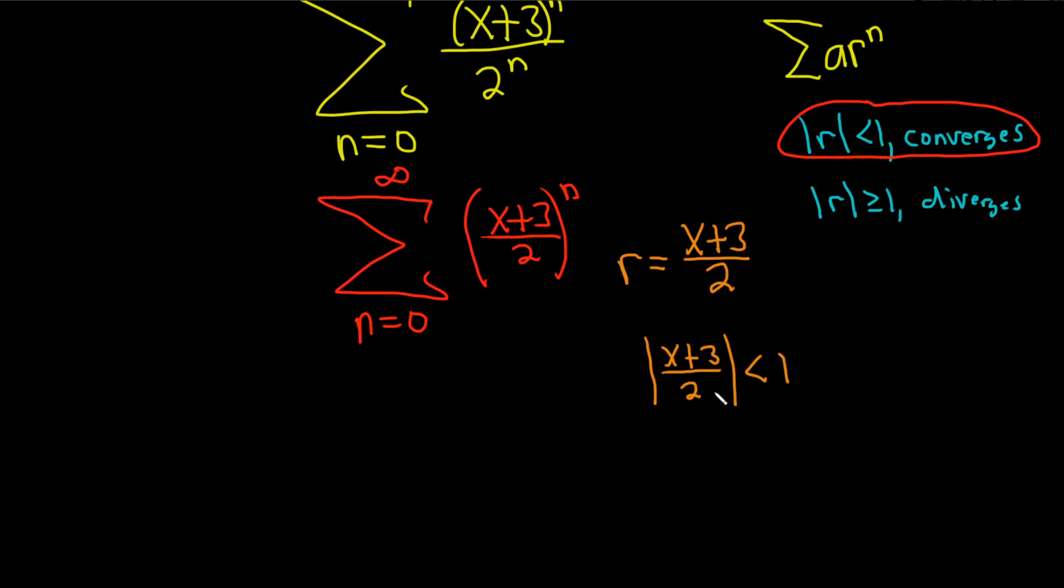When you take the absolute value of a fraction, you basically just take the absolute value of each piece. It's |x+3| over the absolute value of 2, which is just 2, so I won't write the absolute value. And that's less than 1.